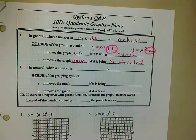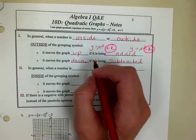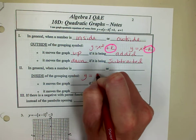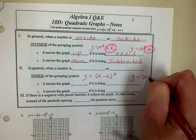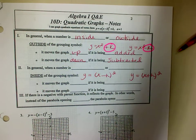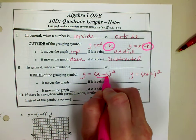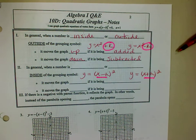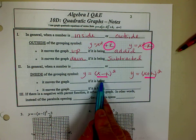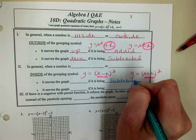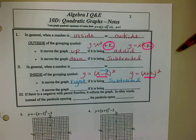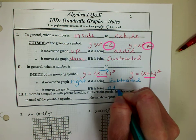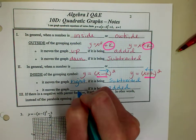Now let's talk about when the number is on the inside of the grouping symbol. I've got x minus h on the inside and x plus h on the inside. If you remember from when we graphed before: if I have a number being subtracted on the inside of parentheses, then I'm actually going to the right — I do the opposite. And if it's x plus h, so if the number is being added, again I do the opposite, so I'm going to go to the left.